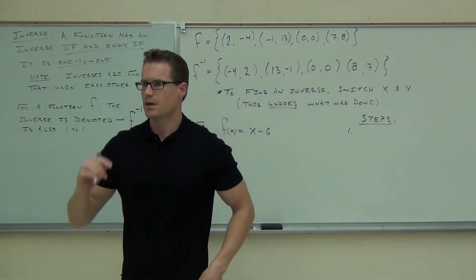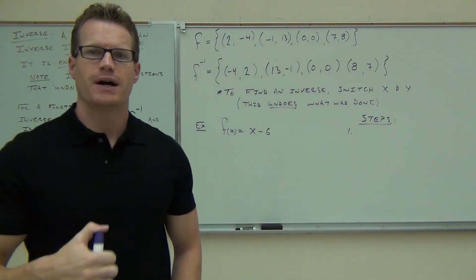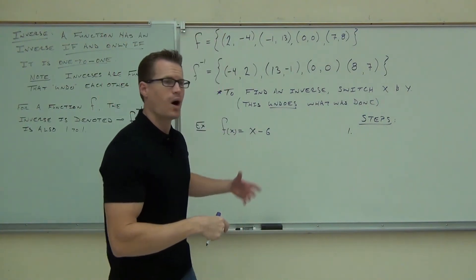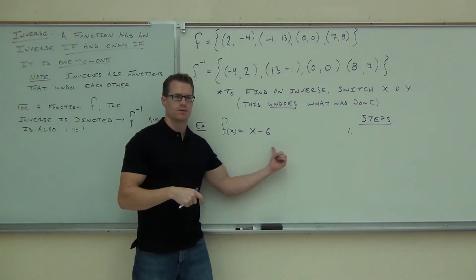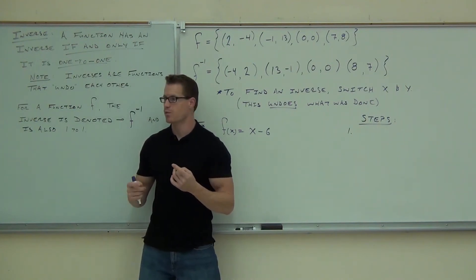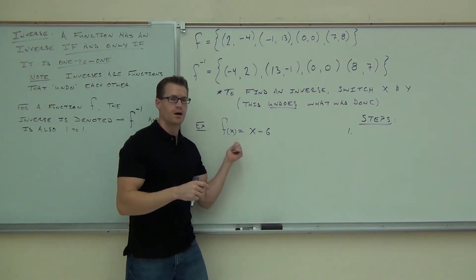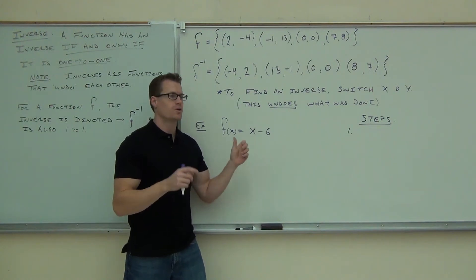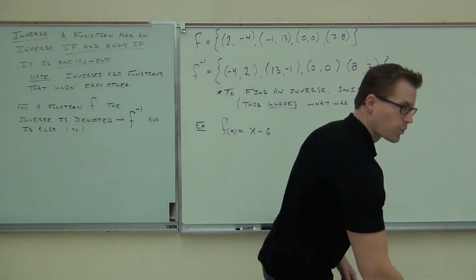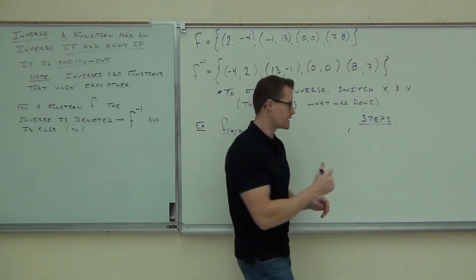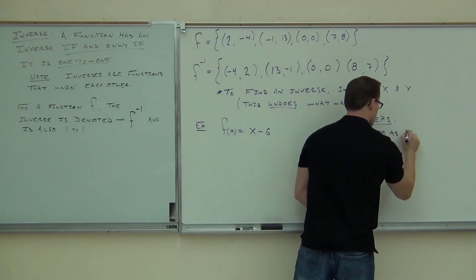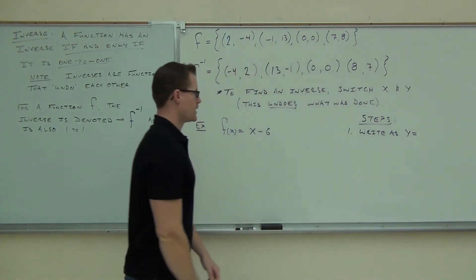Number one: the act of finding an inverse really comes down to — can you switch X and Y? The problem is, do I have a Y up here right now? Some of you understand that one of these things stands for Y. So instead of F of X or G of X, write that as Y. That's your very first step: write Y equals instead of F of X equals.